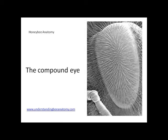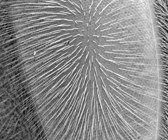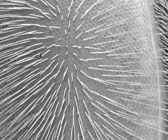Bees have two large compound eyes and three small simple eyes called ocelli. This video, however, is just about the compound eyes.